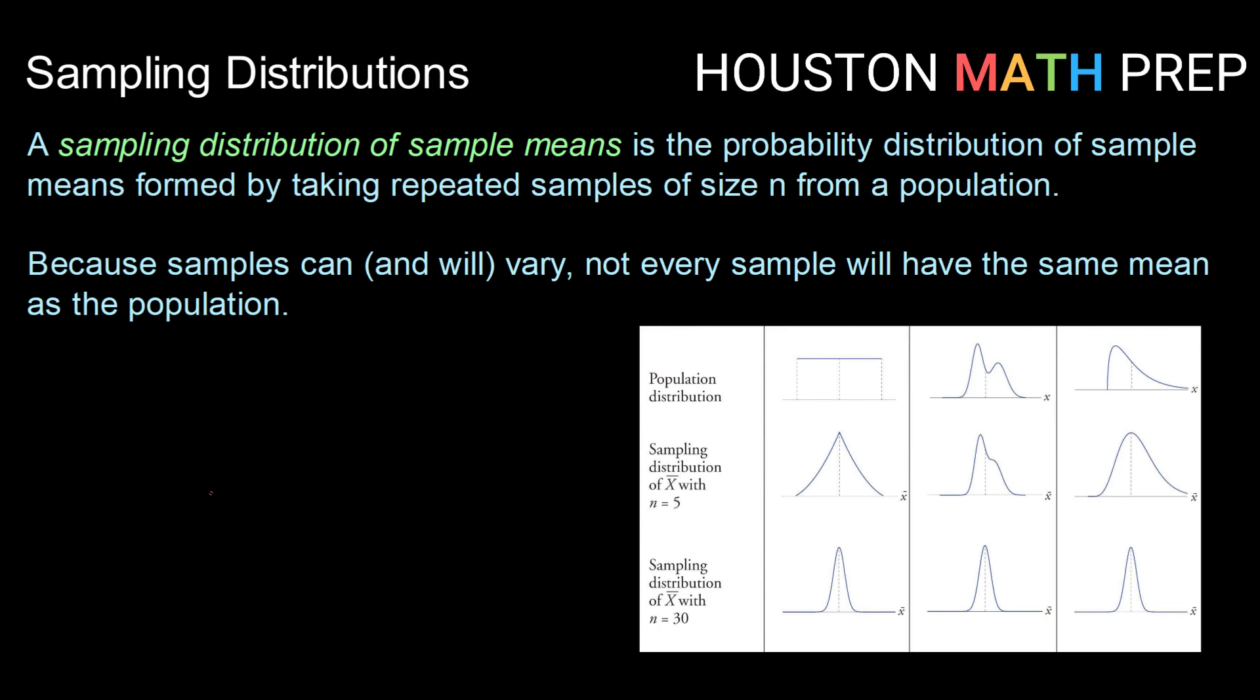So what that means is we're going to look at what if we took a population data set and repeatedly took samples of size n over and over and over. And for each one of those samples, we calculated the mean. What would a distribution filled with those means look like? And what properties would it have? Well, it turns out that because the samples can and will vary, while each individual sample may not have the same mean as the population, the distribution of those means will have a very similar mean.